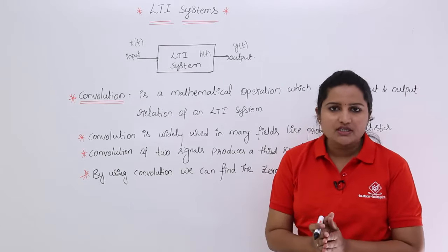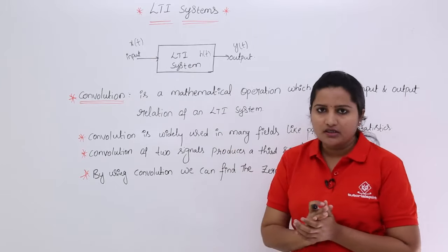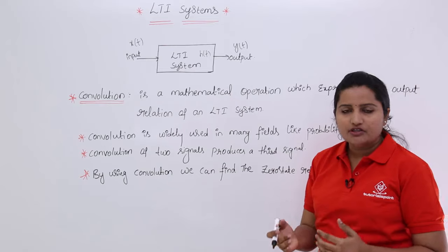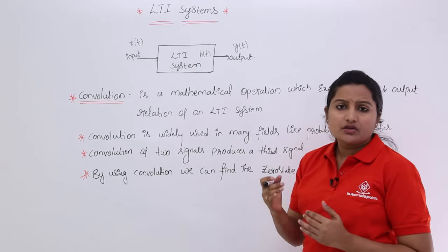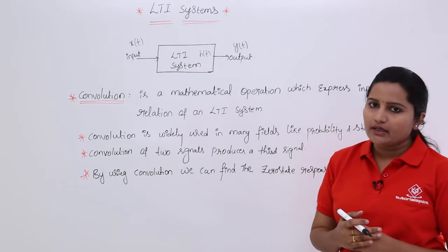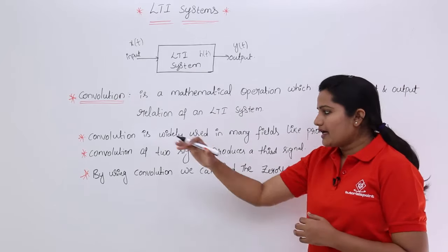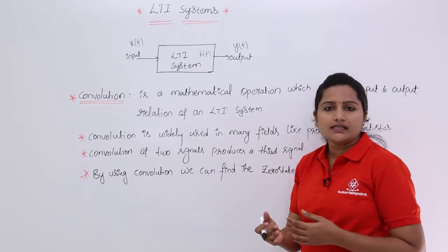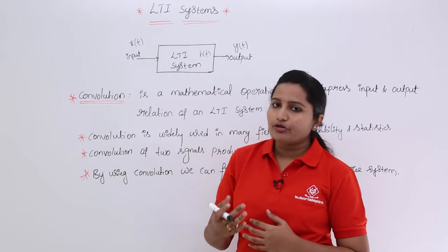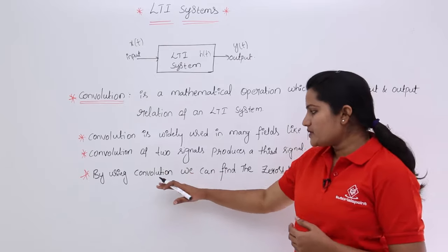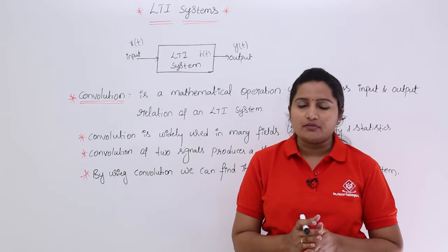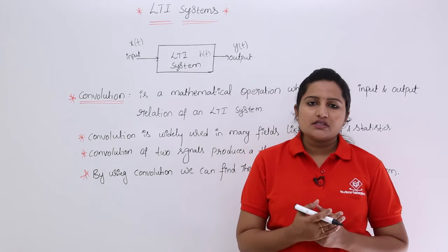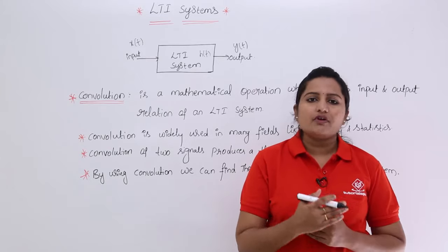Before getting into the equations, let's discuss convolution. Convolution is a mathematical operation which expresses the input-output relation of an LTI system in terms of the impulse response. Convolution is widely used in many fields like probability and statistics. The convolution of two signals always produces a third signal. By using convolution we can find the zero-state response of a system, which is commonly asked in technical exams.